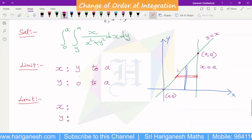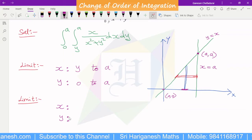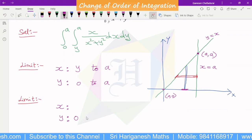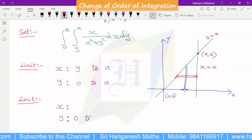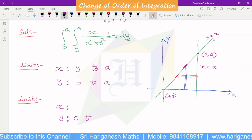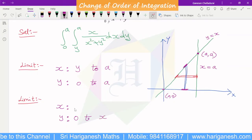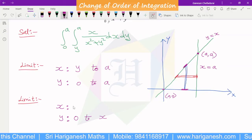Now vertical strip: y limit is equal to 0 and the strip ends at the straight line y is equal to x. So x is constant, x is constant from 0 to a.